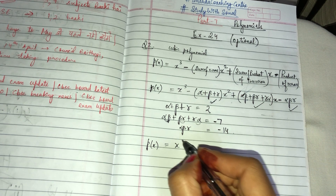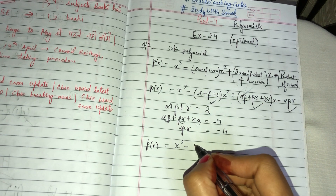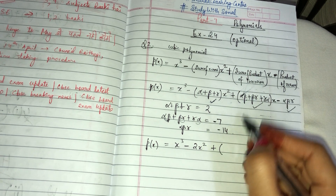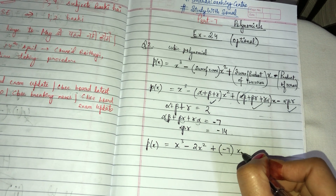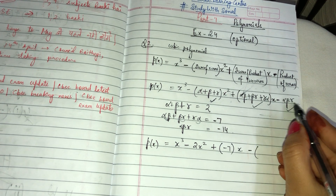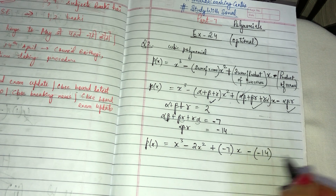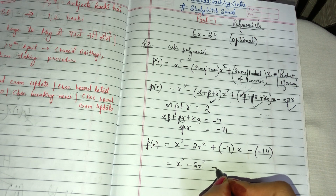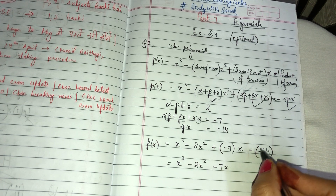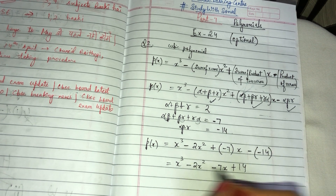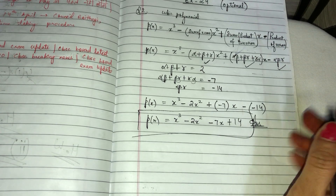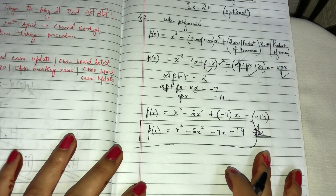So substituting: x³ minus 2x² plus (minus 7)x minus (minus 14). That gives us x³ minus 2x² minus 7x plus 14. Minus and minus makes plus. So this is the polynomial answer, boxed. We have done the second question.